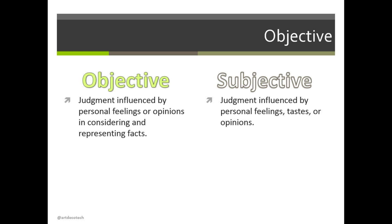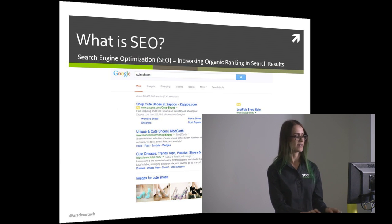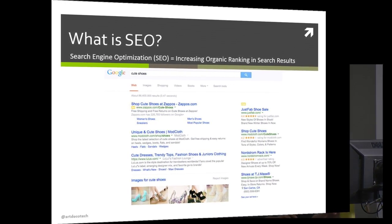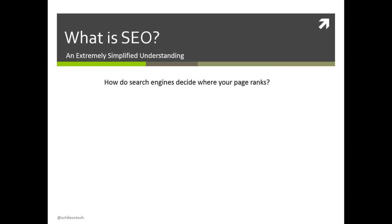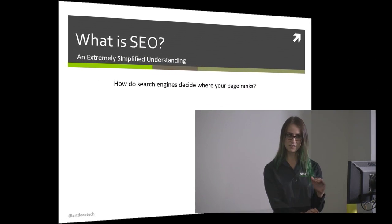Let's talk about objective versus subjective. When it comes to SEO, objectively we want to look at things without feelings or opinions, but SEO is a little more subjective because it depends on who you ask. SEO is the process of ranking your content in Google — we all want to get to number one. We're talking about organic results, the ones you don't have to pay Google to appear in.